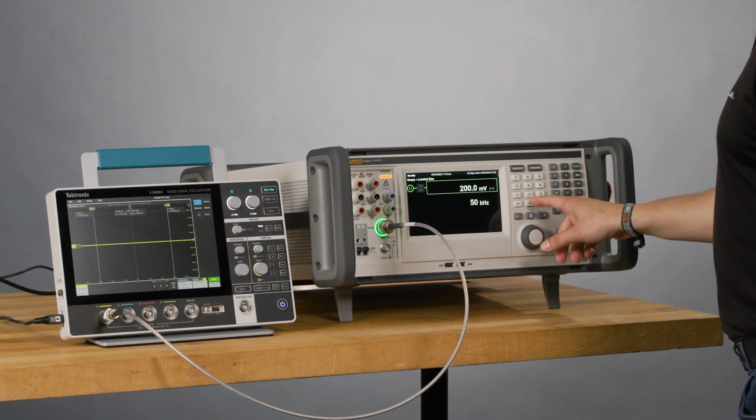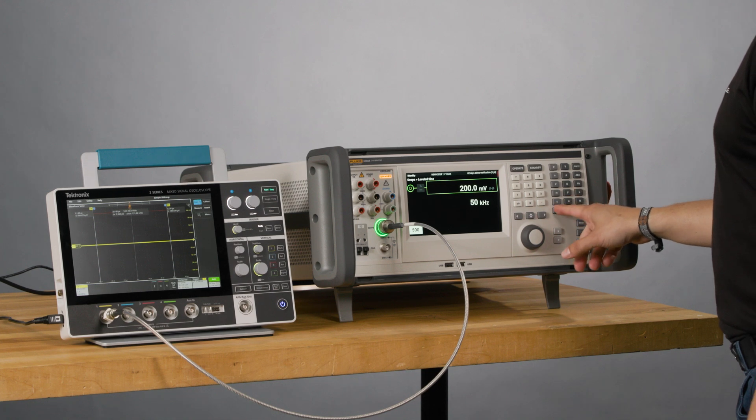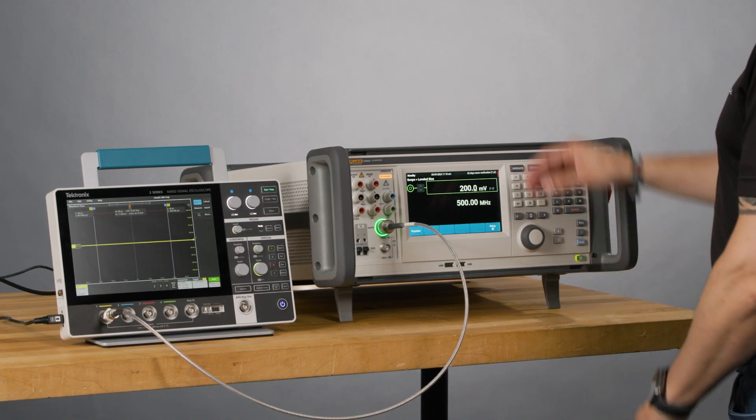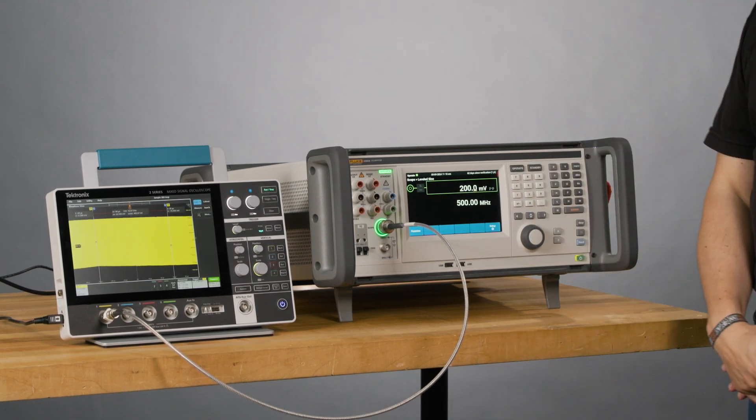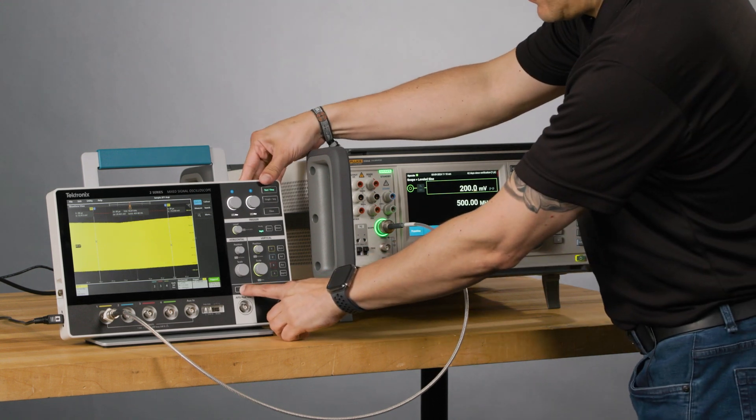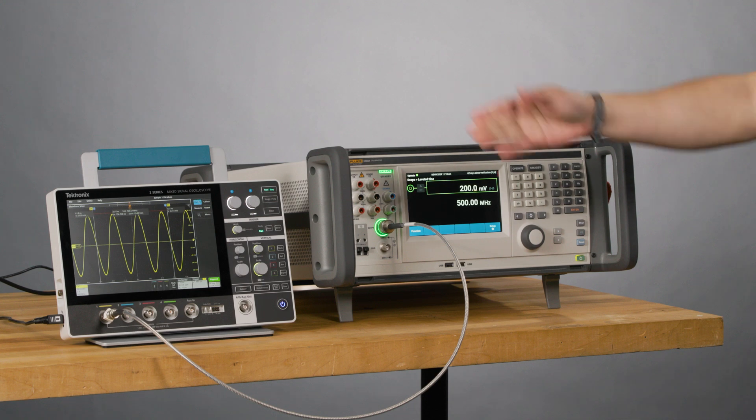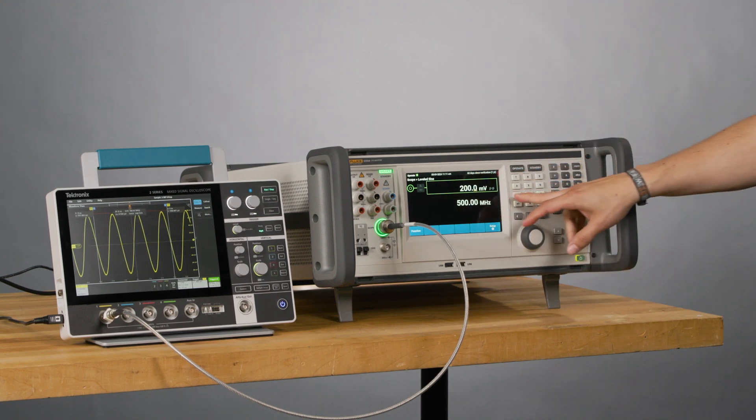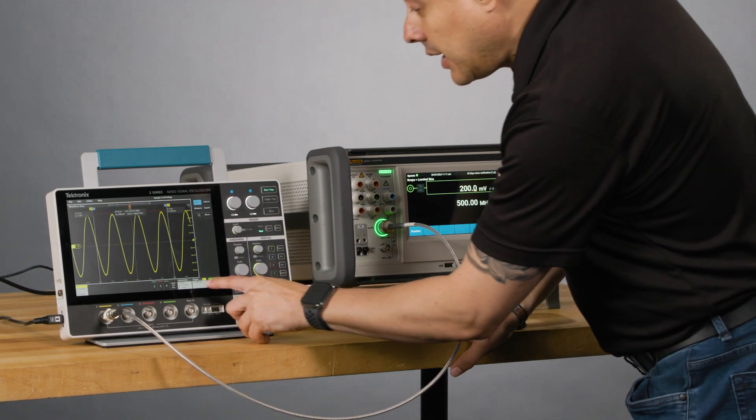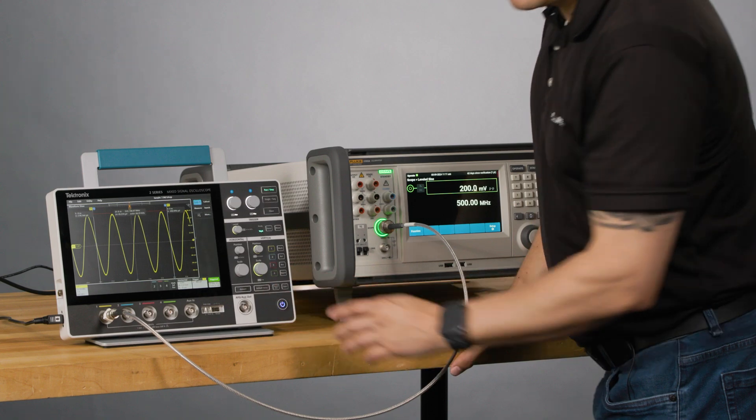I'm going to jump to 500 megs. Better view. Now I can see 200 millivolts, 500 megs, and I'm seeing an attenuation, which is normal.